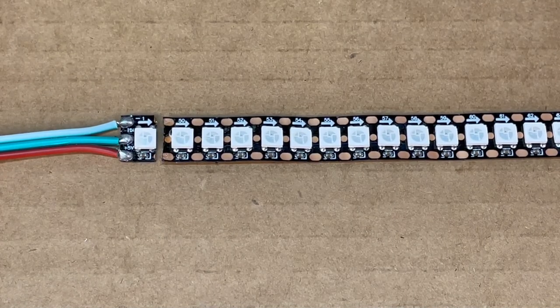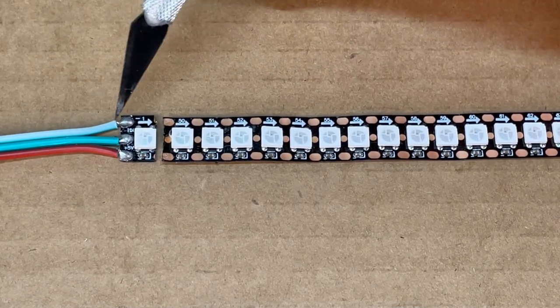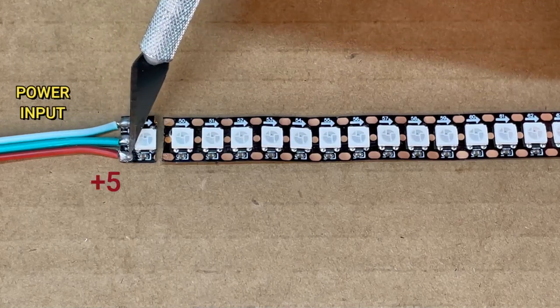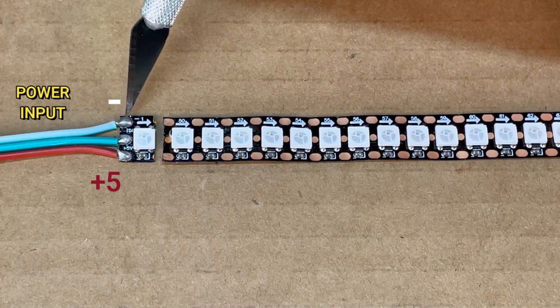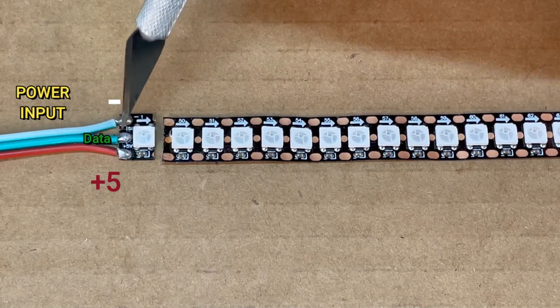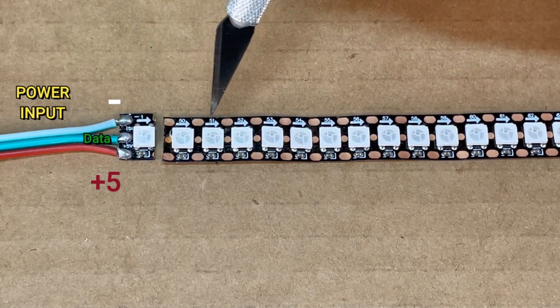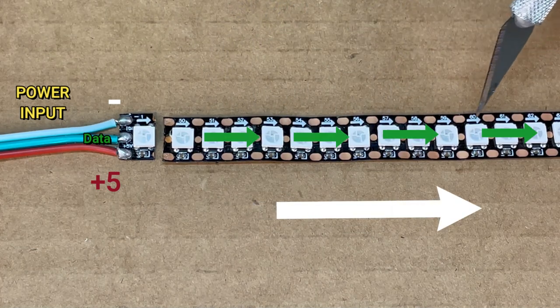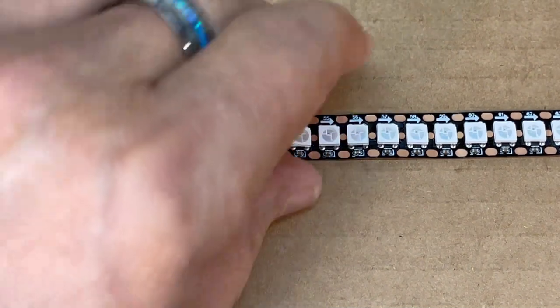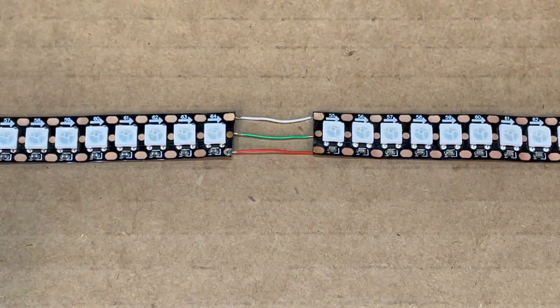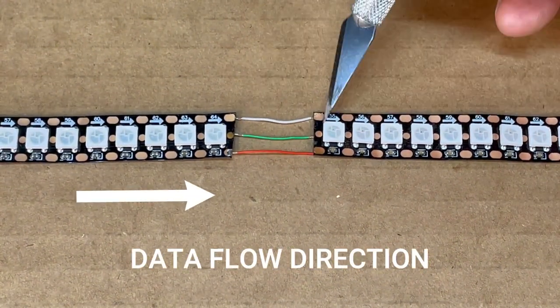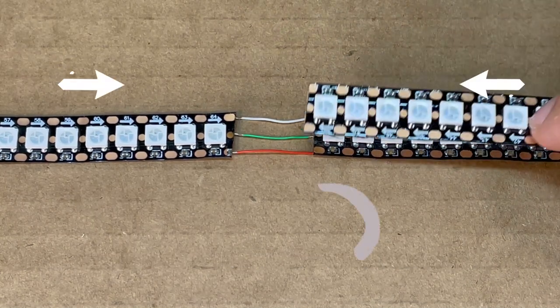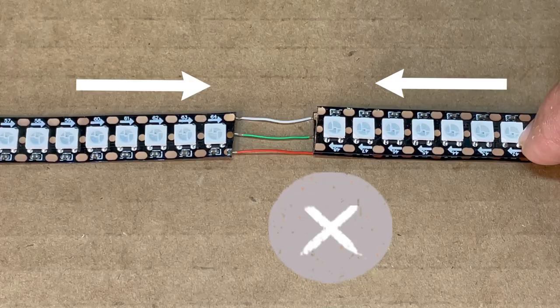Now let's take a second to discuss the LED strip. You'll notice that the power side has three wires connected to it. Red is your five volts, white is your ground, and green is your data. You'll also notice the arrows on the strip. That indicates the direction of the data flow. That is very important when connecting to the next strip. You must connect the green data to the next strip where the data is going in the same direction on that strip. If not, your LED strip will not work properly.